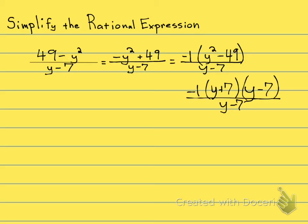Now see anything that cancels out? Sure, y minus 7 and y minus 7. The whole binomial cancels out, so I'm gonna be left with negative 1 times y plus 7.